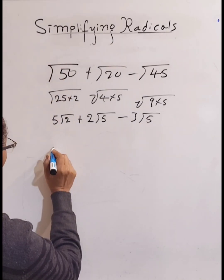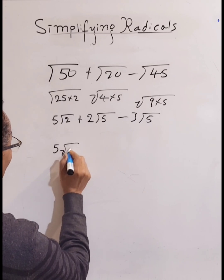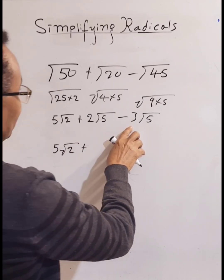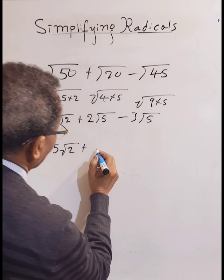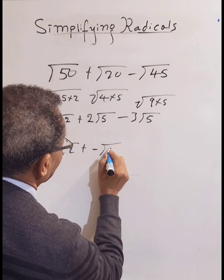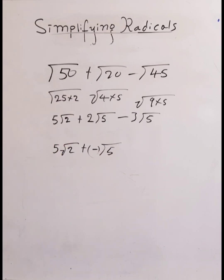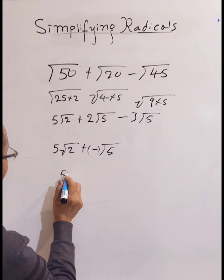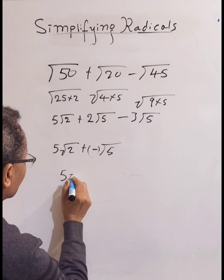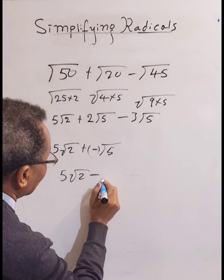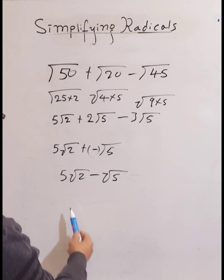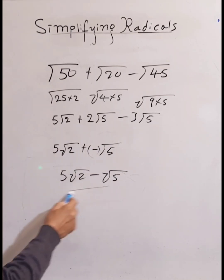So we have 5 root 2, plus 2 root 5, take away 3 root 5. That gives us negative root 5, since 2 minus 3 is negative 1. The final answer is 5 root 2 minus root 5. They have different radicands so we can't simplify further.